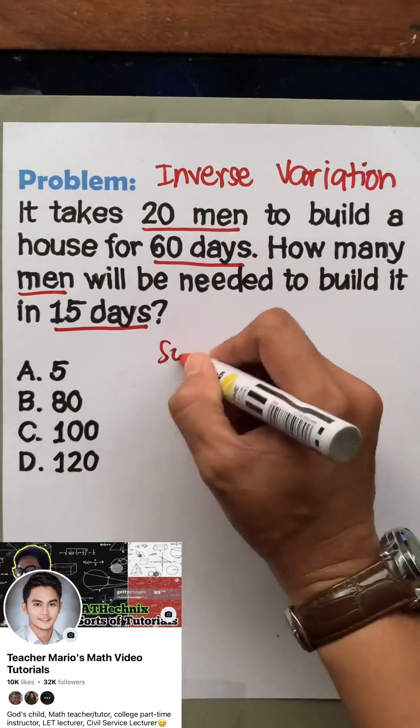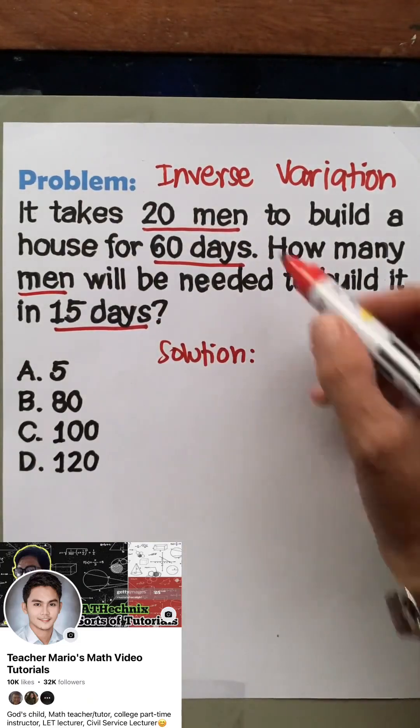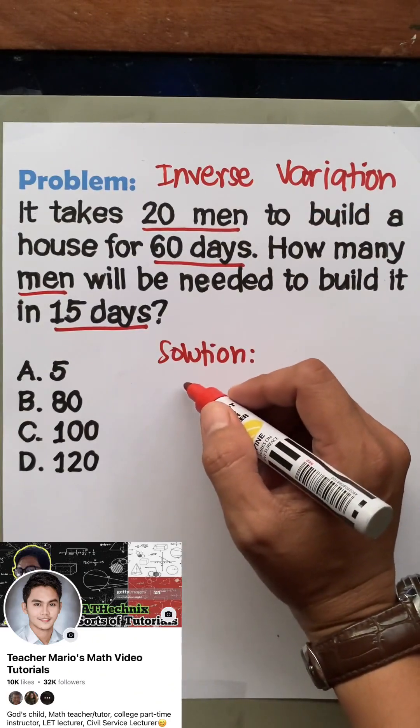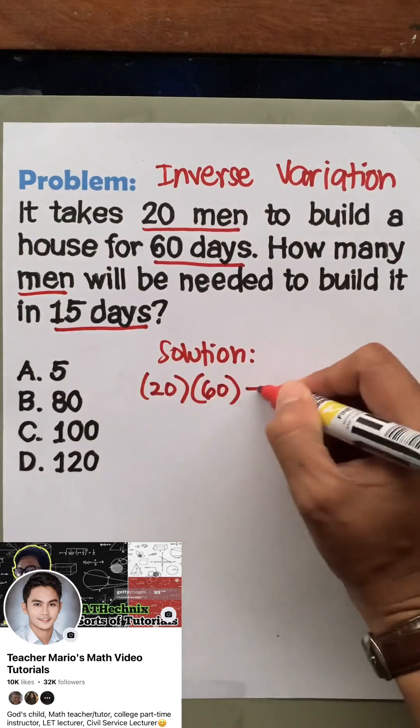For our solution, since it is an inverse variation, we don't divide the numbers but instead we get the product of them. So 20 multiplied by 60 days is equal to the number of men (which is unknown) times 15 days. For the variable x, 20 times 60 is 1200 equals x times 15, which is 15x.